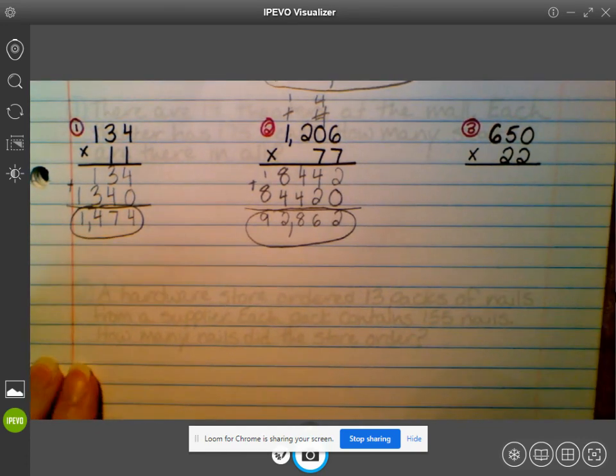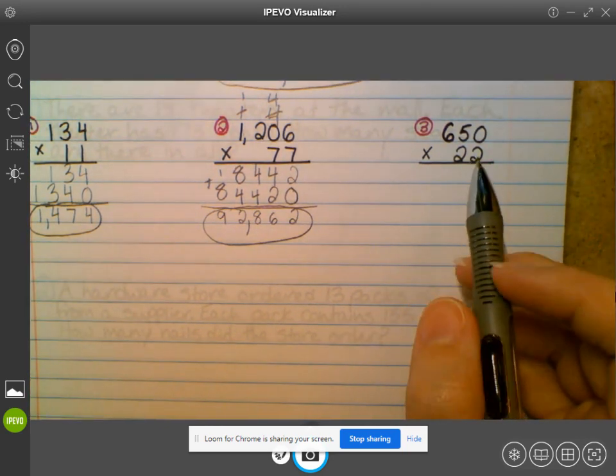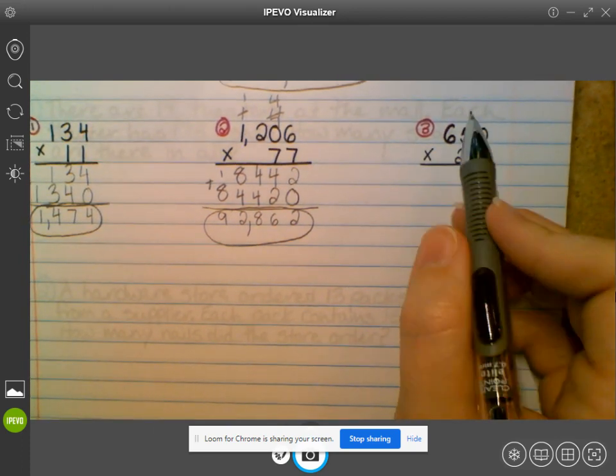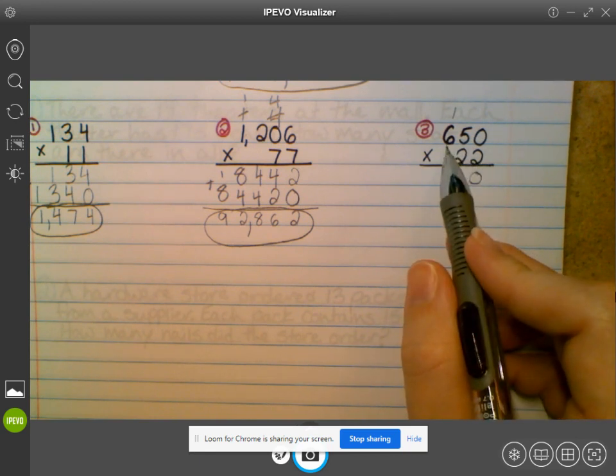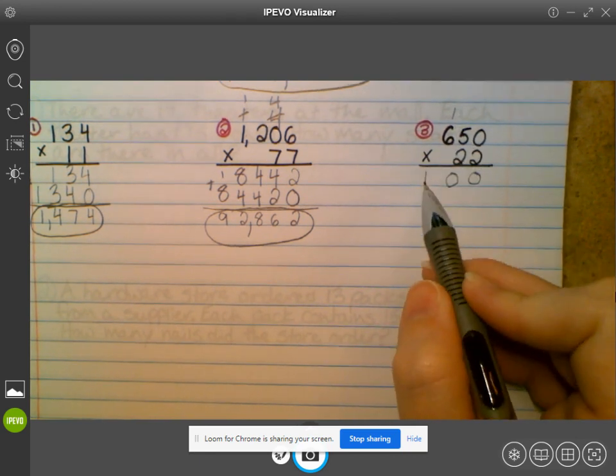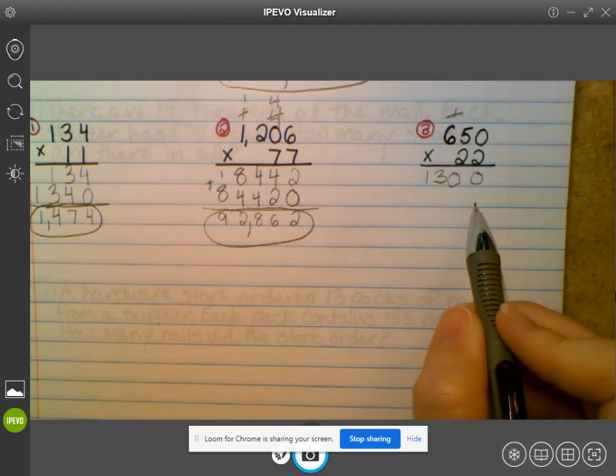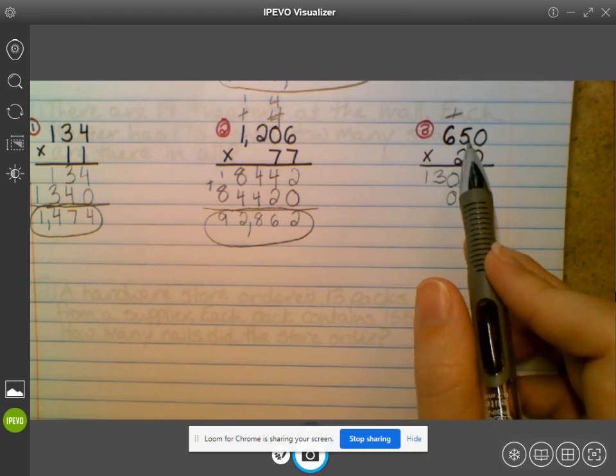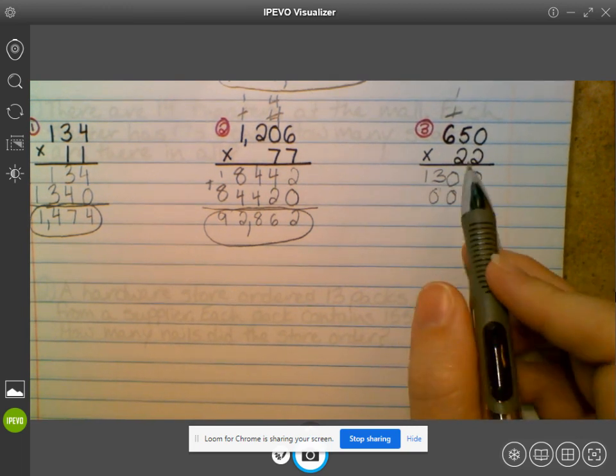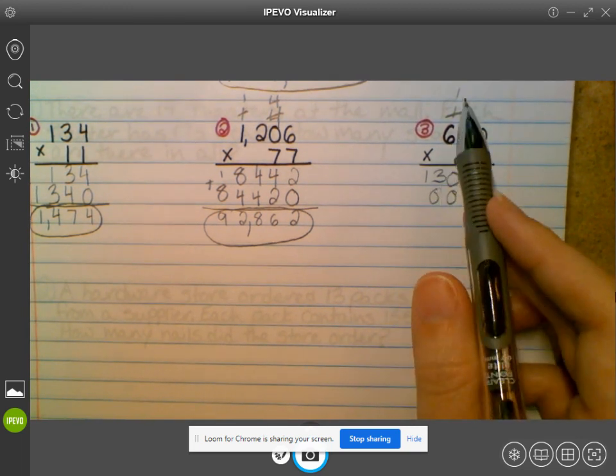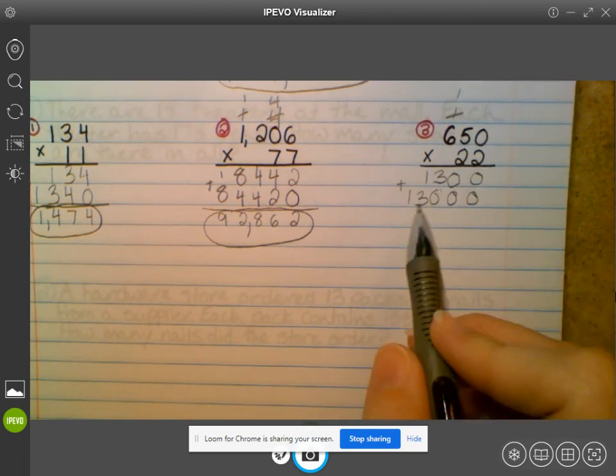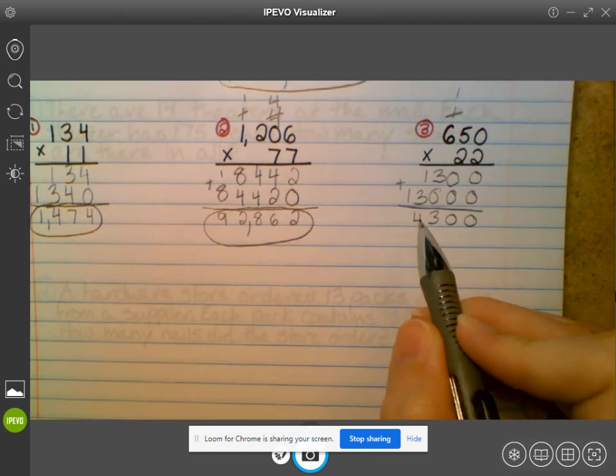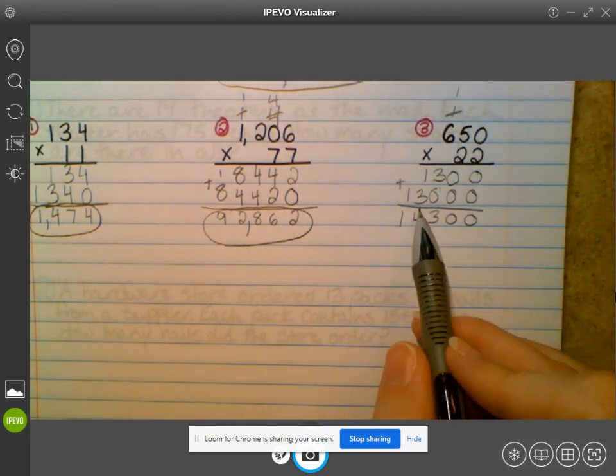All right. Then we have number three. So two times zero is zero. Two times five is ten. Carry our one, bring down the zero. Two times six is 12 plus one is 13. Cross out the one I carried, add my placeholder zero. Two times zero is zero. Two times five is ten. Carry the one, bring down the zero. Two times six is 12 plus one is 13. And we add our partial products. So we get zero, zero, three, four, one. 14,300.